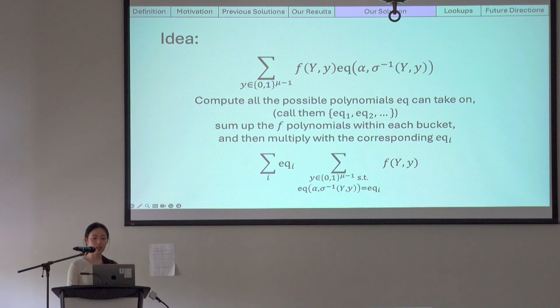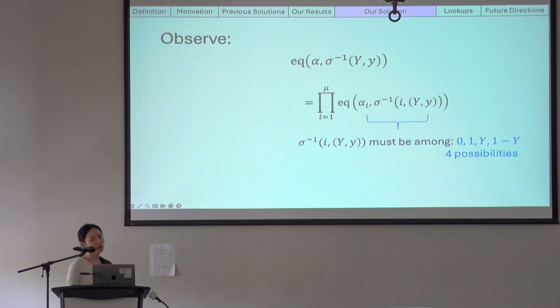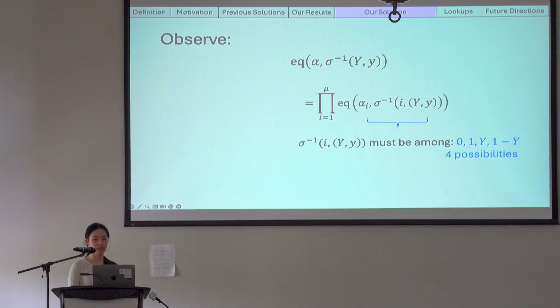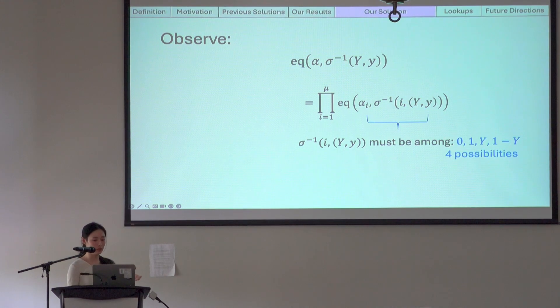So let's look at how many buckets there actually are. Observe that the sigma inverse in the first round of sum check must be among one of the four polynomials. It can be zero, or one, or y, or one minus y, and that's it. Because it is degree one in capital Y, and it maps to zero or one.